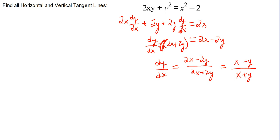In order to find the horizontal tangent lines, we have to make the numerator equal to 0, because that would be when the entire derivative is equal to 0. That occurs when x minus y equals 0, or when x equals y.